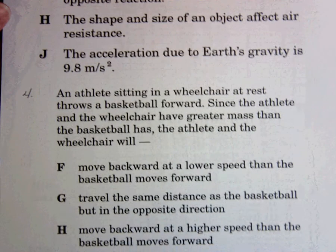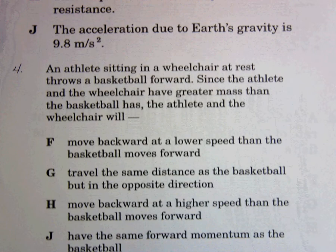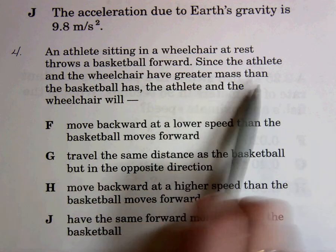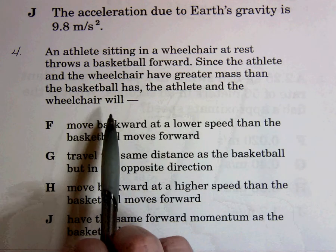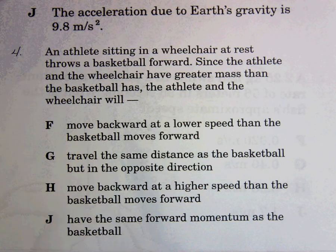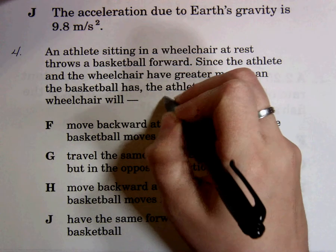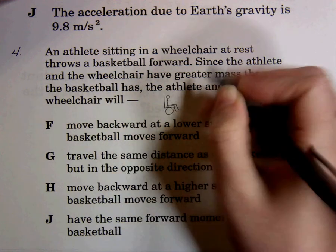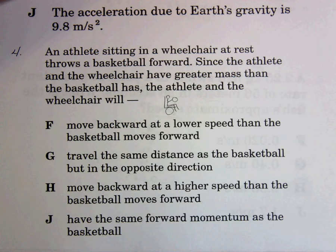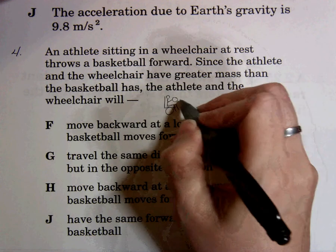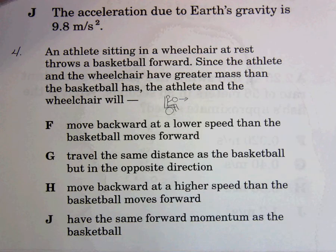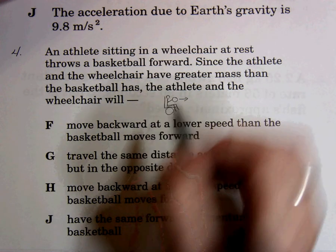Moving on to number four: an athlete sitting in a wheelchair at rest throws a basketball forward. Since the athlete and wheelchair have greater mass than the basketball, the athlete and wheelchair will — what? This is another case of action-reaction: for every action there's an equal and opposite reaction. I'll draw a stick figure in a wheelchair with a basketball. If he tosses the basketball forward, that's the action, and the reaction should be equal and opposite.